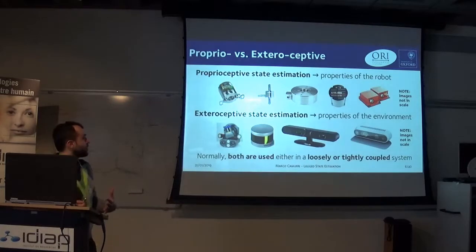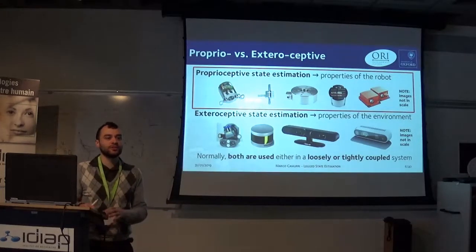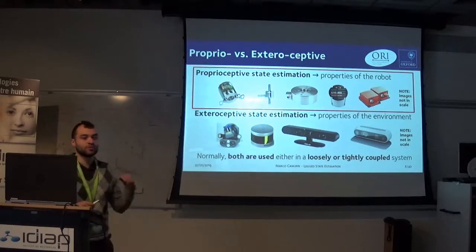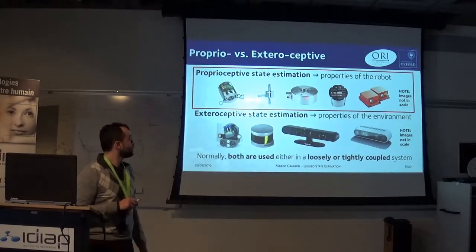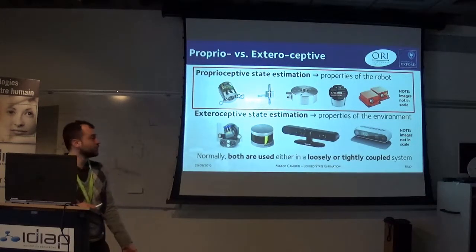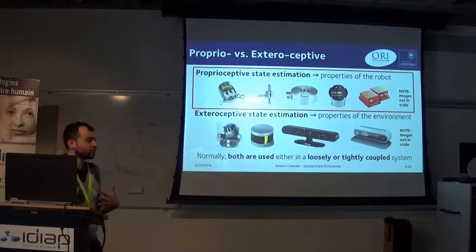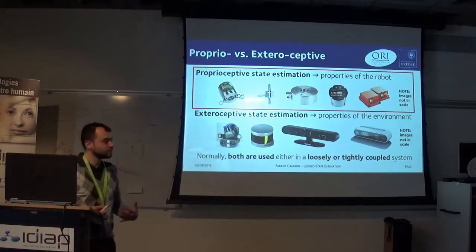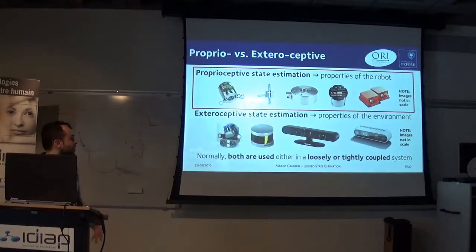But also for other tasks like localization, mapping, and path planning, you can accept a lower frequency, but it should be as precise as possible. When we speak about proprioceptive, it means we are interested in using sensors that measure quantities related to the properties of the robot, like encoders to measure the position of the joints, load cells to measure the torque, force-torque plates on the feet, or MEMS IMUs. For exteroceptive state estimation, we use instead sensors that measure the properties of the environment, and we will see this later.